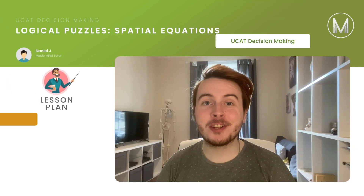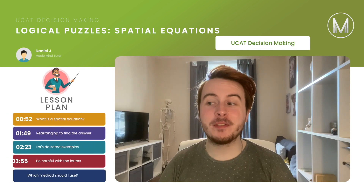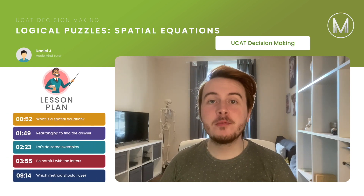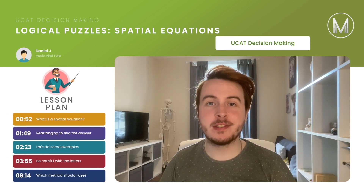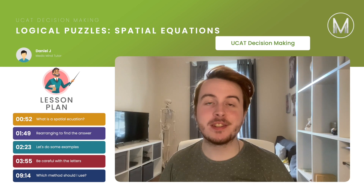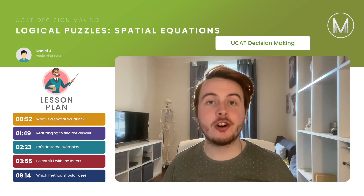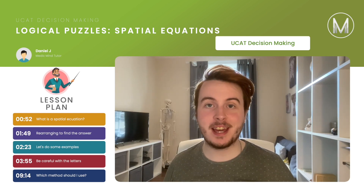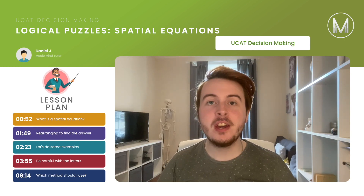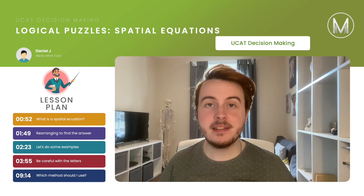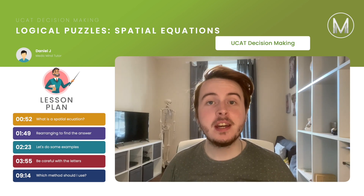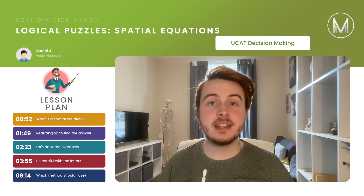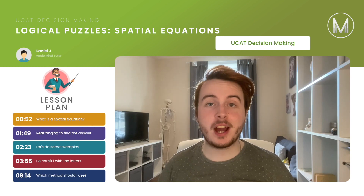Hi there. In this tutorial we're going to talk through one of the really tricky decision-making question types called spatial equations — it's one of the logic reasoning sections. We're going to go over a couple of different methods. If you want to check out everything we're going to cover in this video, check out the timestamps.